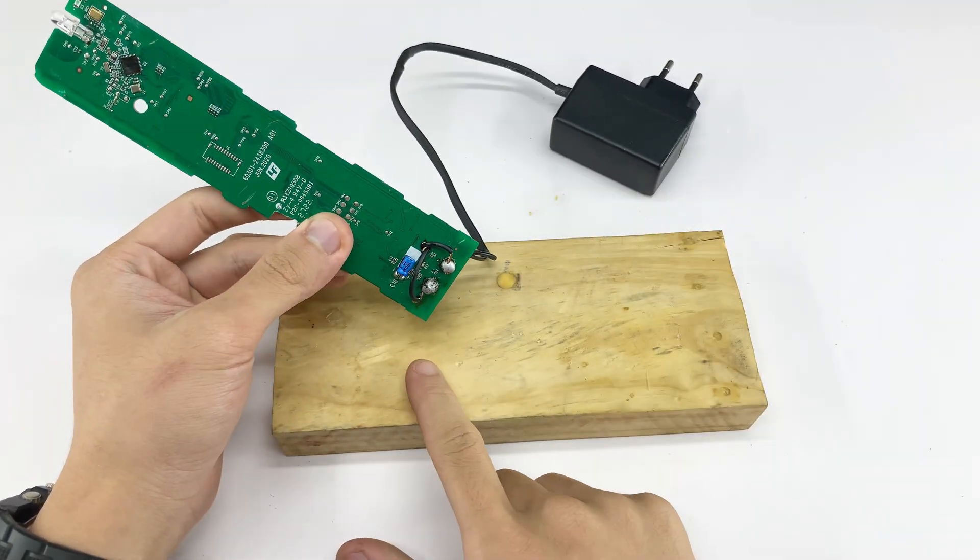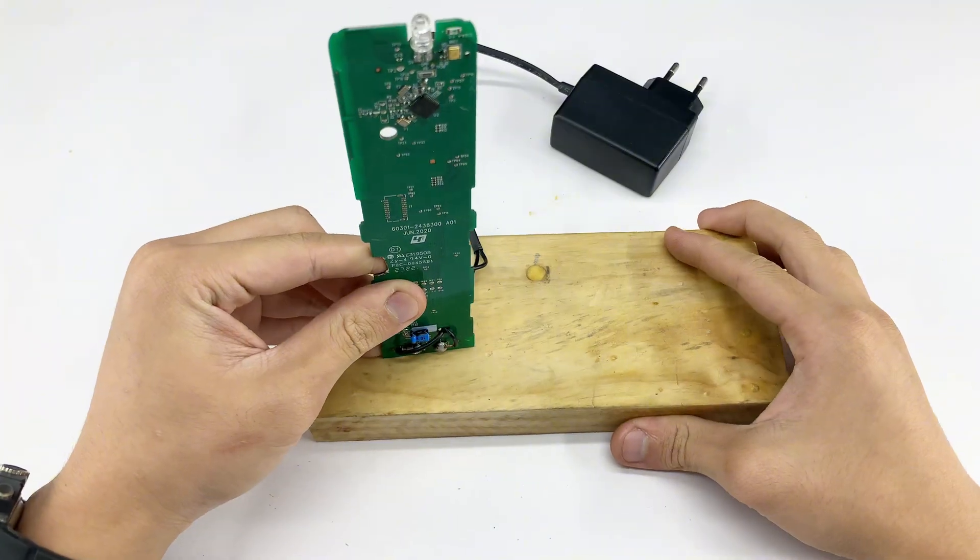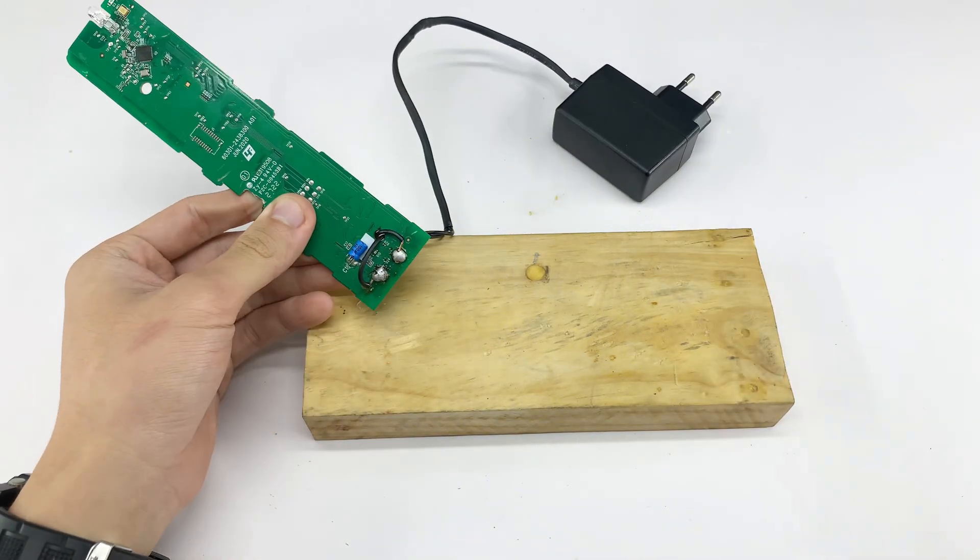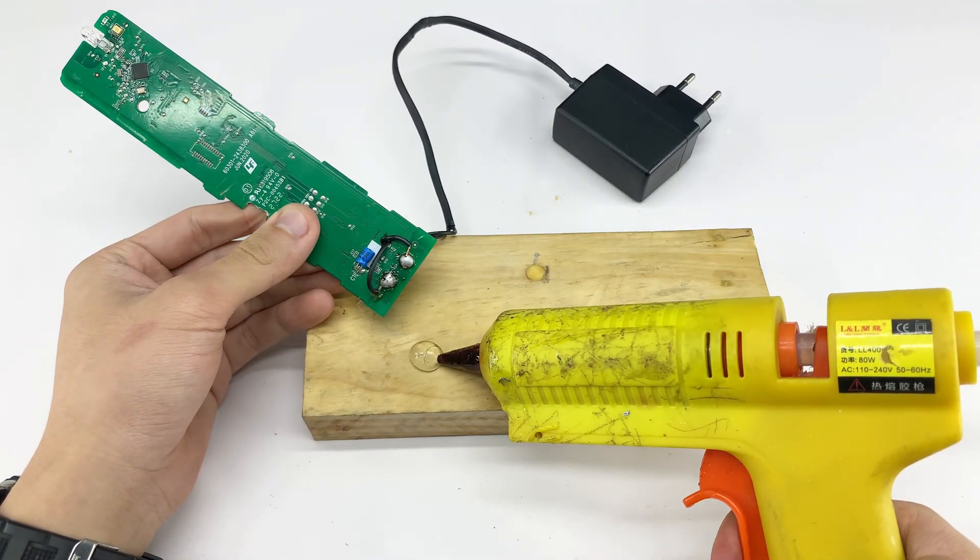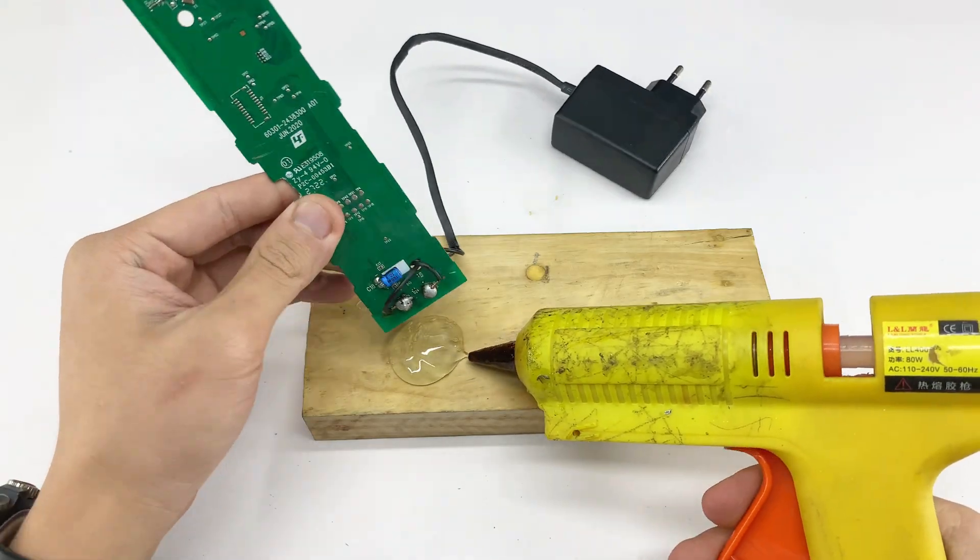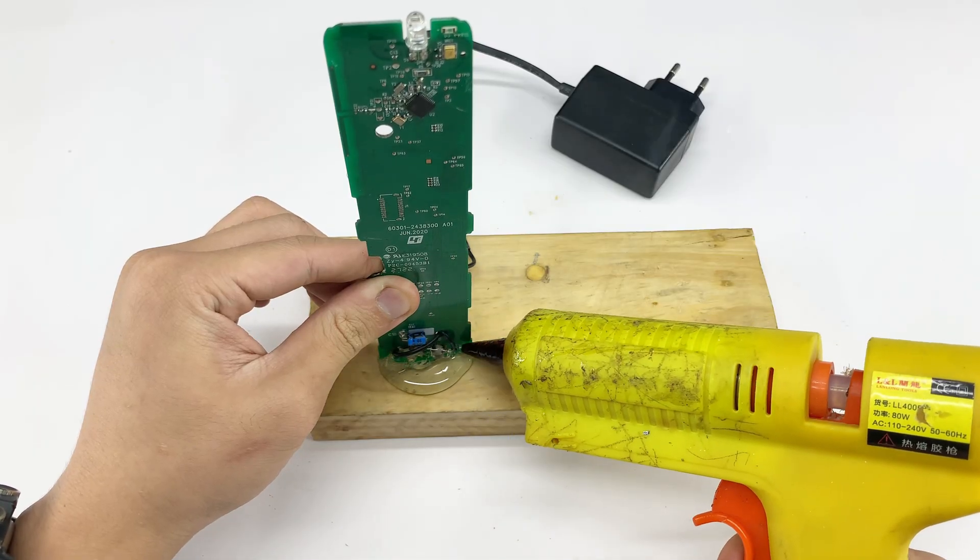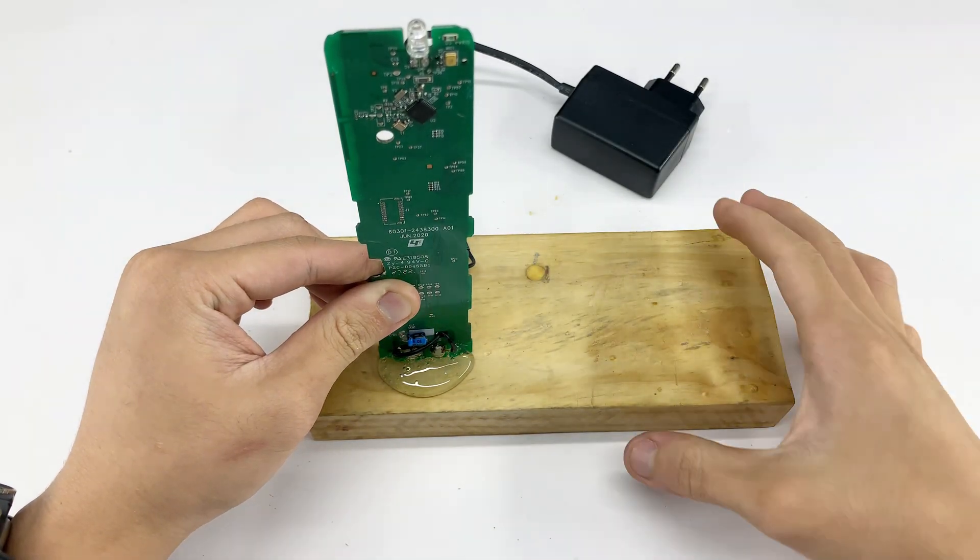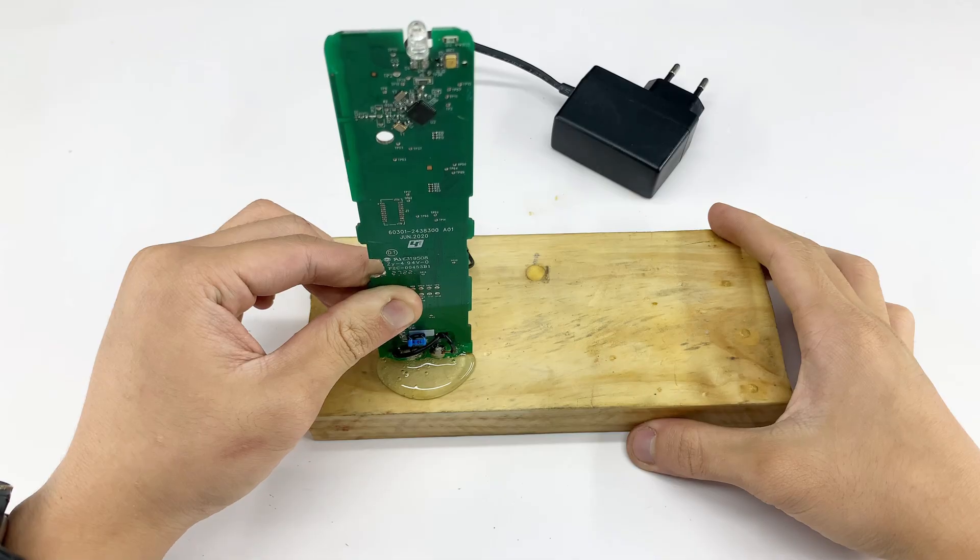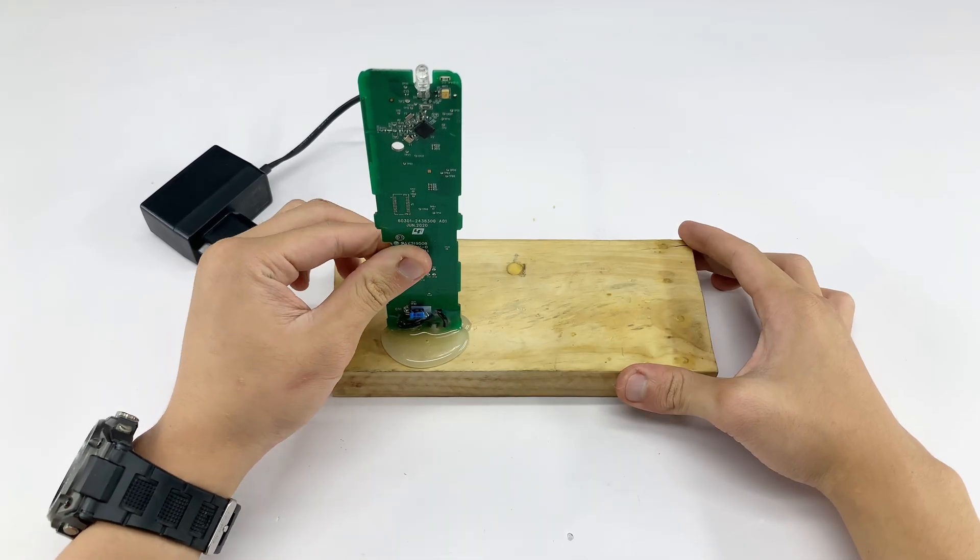To create a sturdy base for our antenna, I'm using hot glue to securely attach the circuit board vertically onto the wooden block. This upright position helps maximize signal reception by allowing the board to act as an antenna element, and the hot glue provides a strong insulated bond. This setup ensures our antenna stands tall and is ready for the next steps.